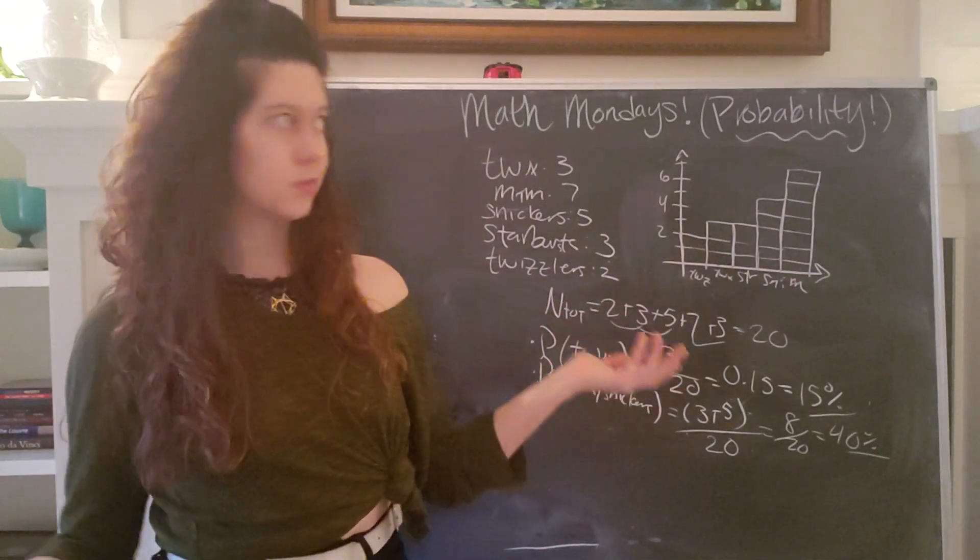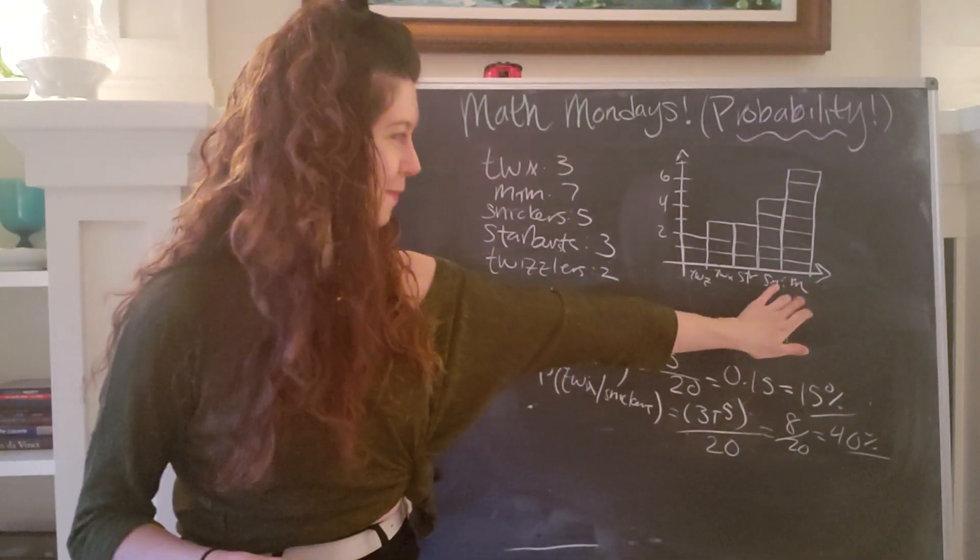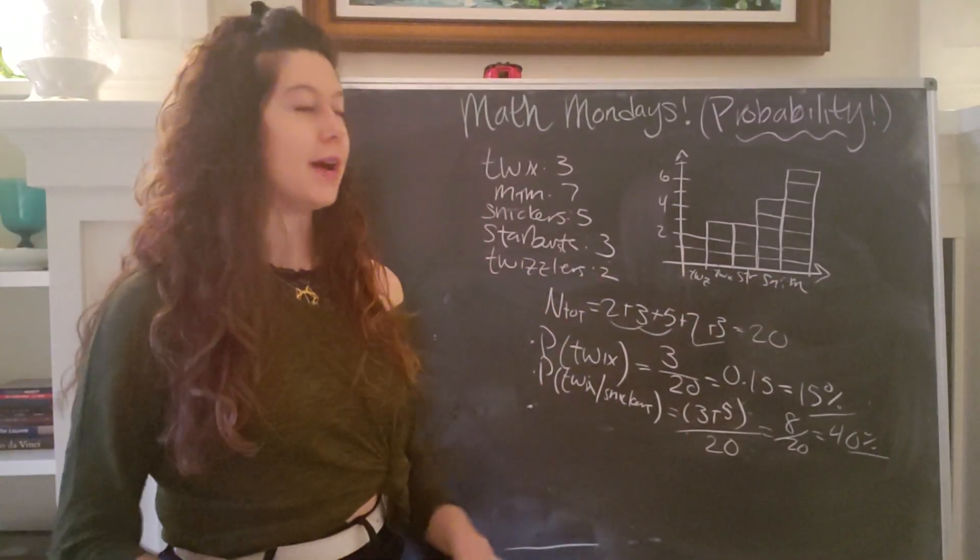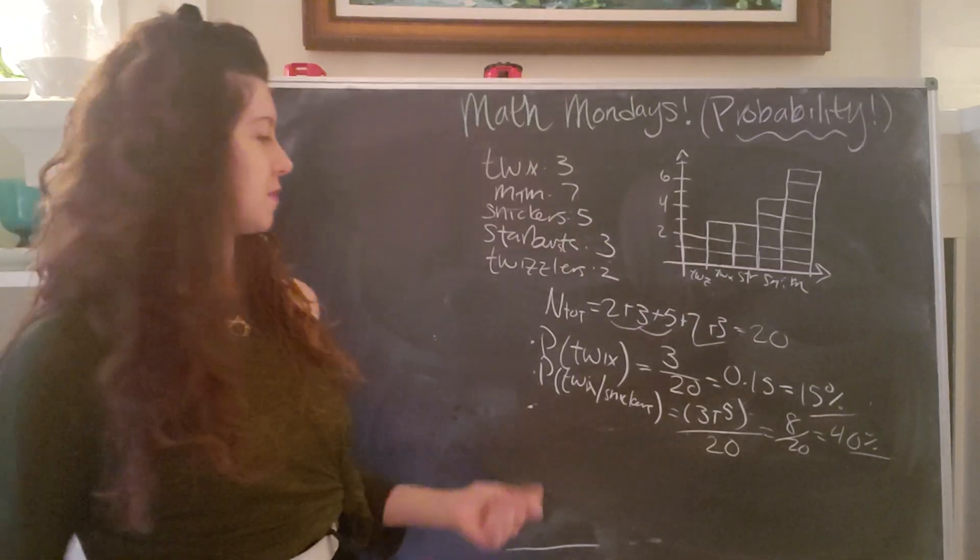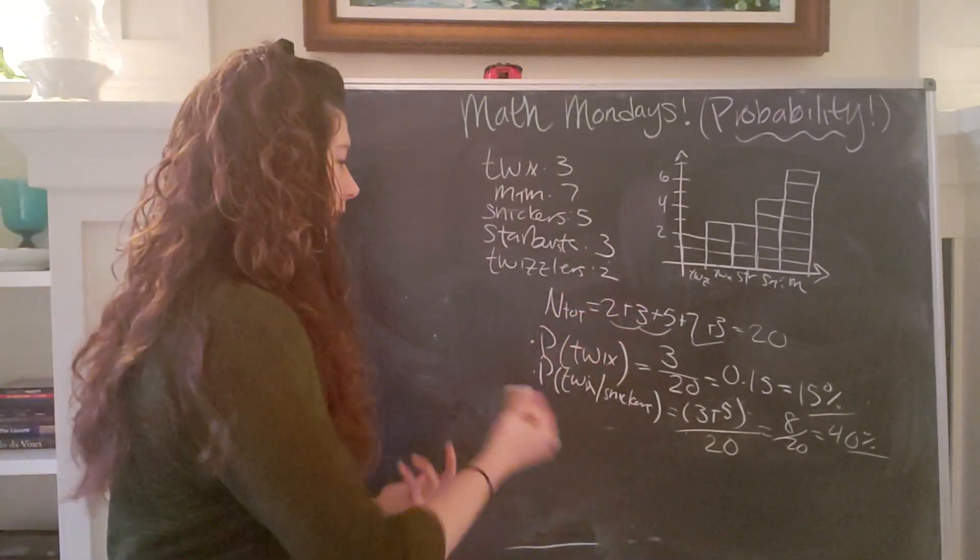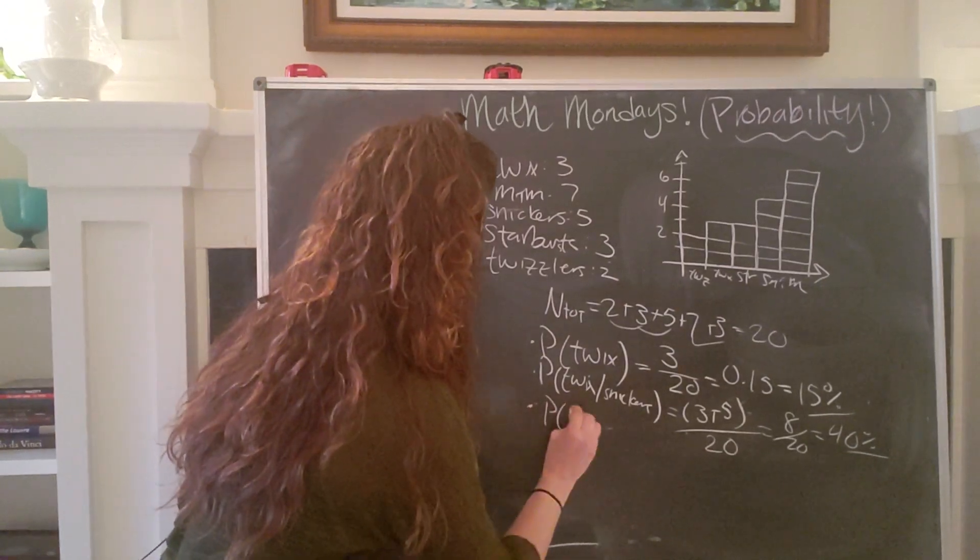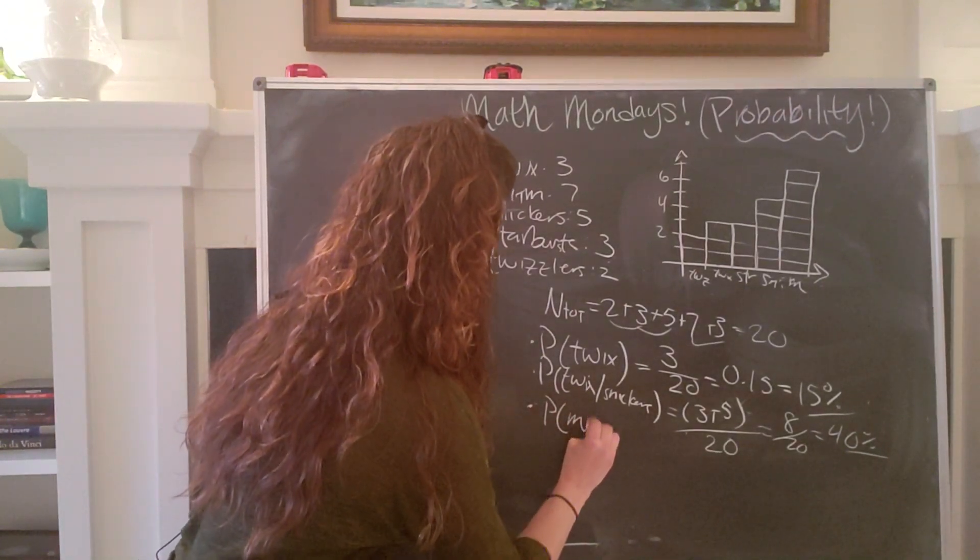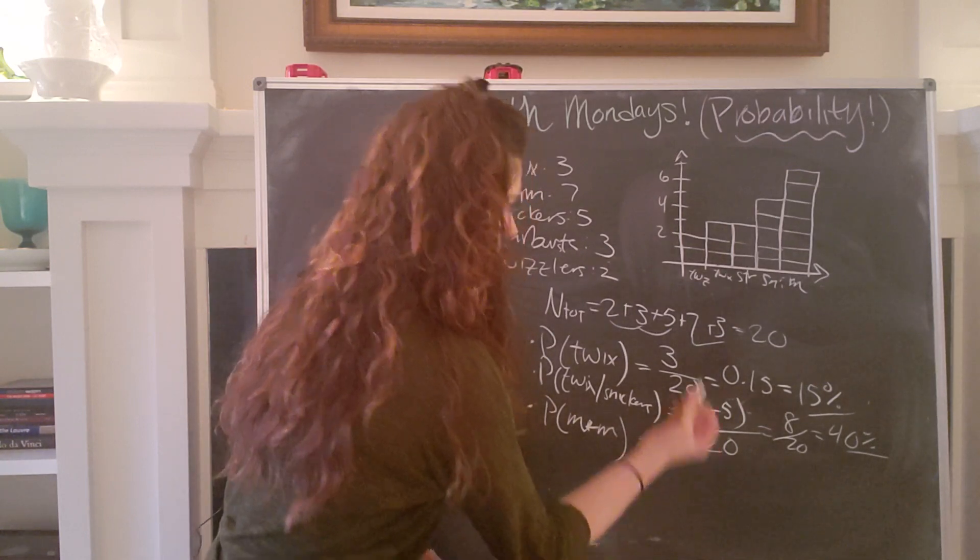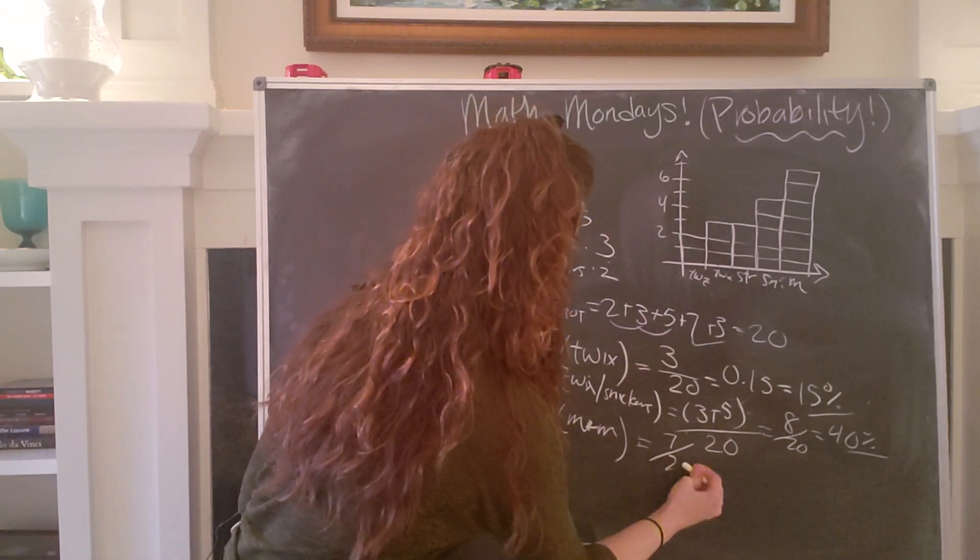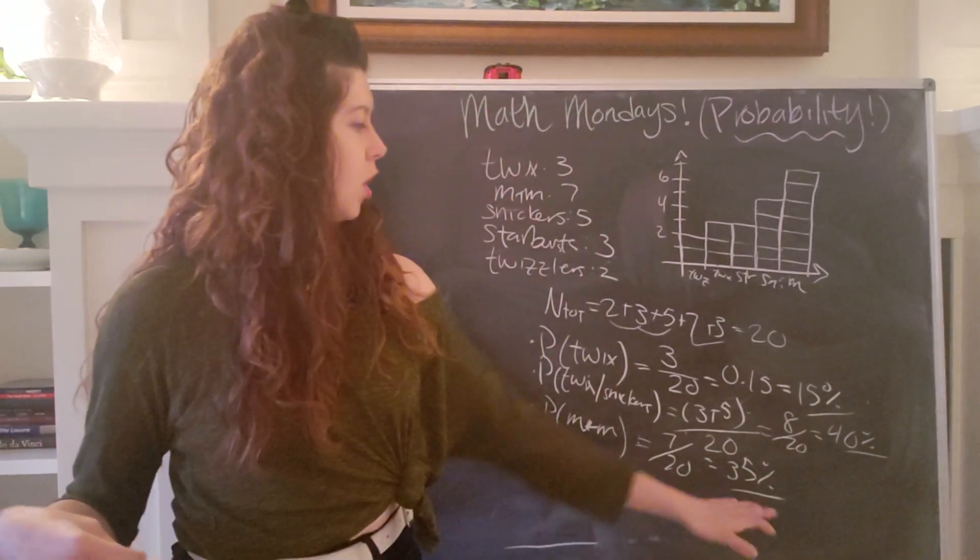Well, just by looking at this plot, we can say seven, because there are, or M&Ms, because there are seven M&Ms, which is more than any of the other individual pieces of candy. So if I were to calculate what the probability of getting an M&M would be, I could say probability of M&Ms is going to be seven over 20 or 35%. Okay.